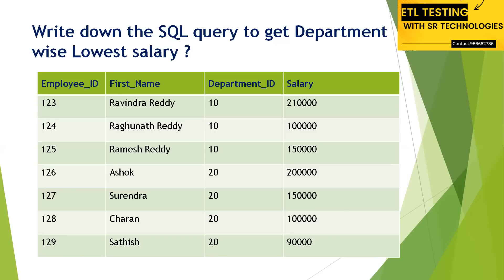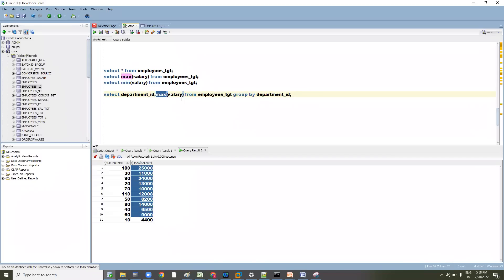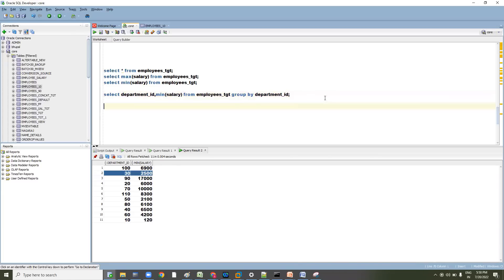We use aggregate functions for this, but if I want the second maximum salary department-wise, can we get it using aggregates? No, we cannot. We have to use some analytical function. Let's first stick to the question: get the department-wise lowest salary. MIN is the aggregate function — the minimum is 106,900. But if I want the two least minimum salaries from each department, we need a different approach.